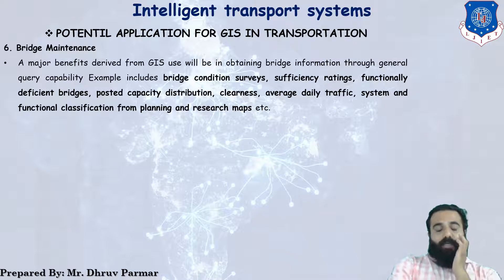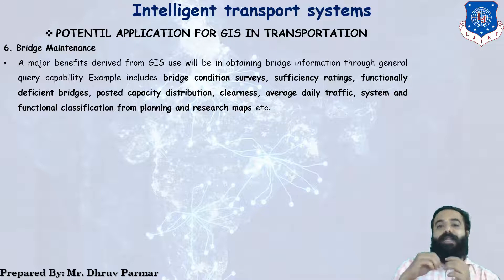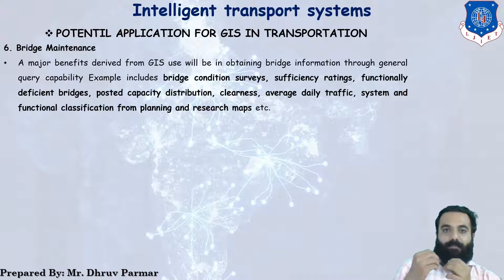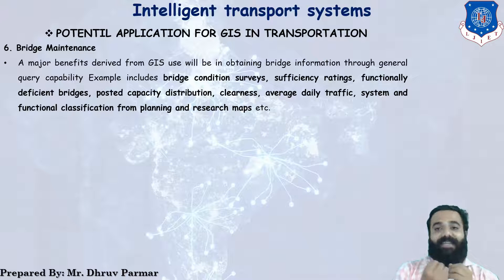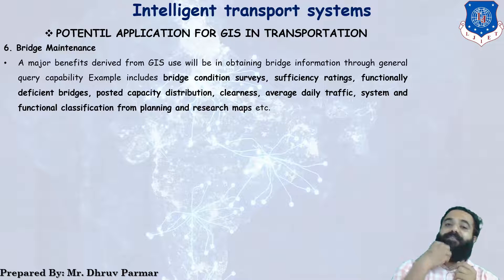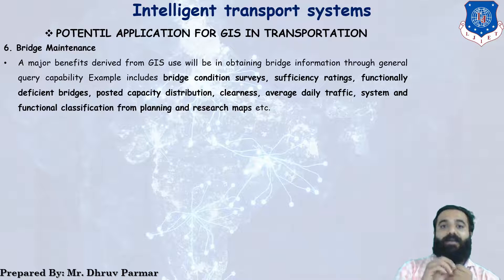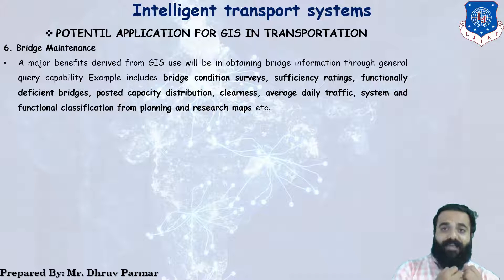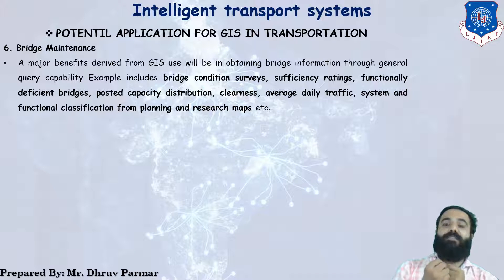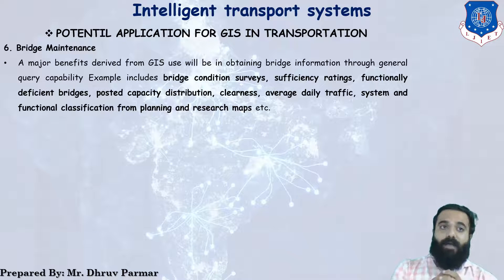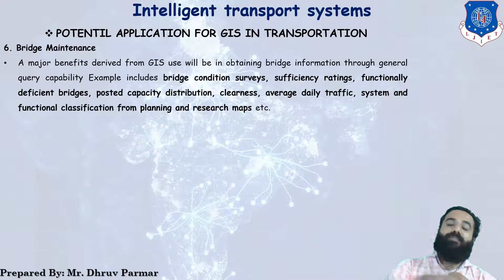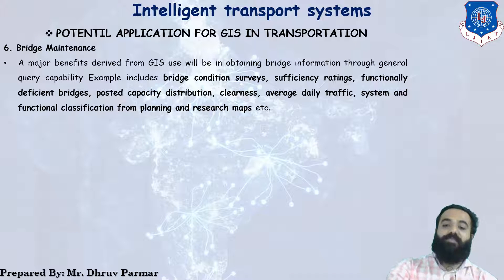The sixth application is bridge maintenance. GIS is used to obtain bridge information such as bridge condition surveys, sufficiency ratings, functional ability deficiency ratings, bridge posted capacity distributions, average daily traffic (ADT), system and functional classification, and planning and research maps. All these things are included in GIS as bridge management properties.